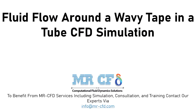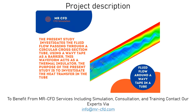In this project, we will simulate the fluid flow around the wavy tape in a tube. The present study investigates the fluid flow passing through a circular cross-section tube using a wavy tape as a barrier. This waveform acts as a thermal insulator, and the purpose of the present study is to investigate the heat transfer inside the tube.